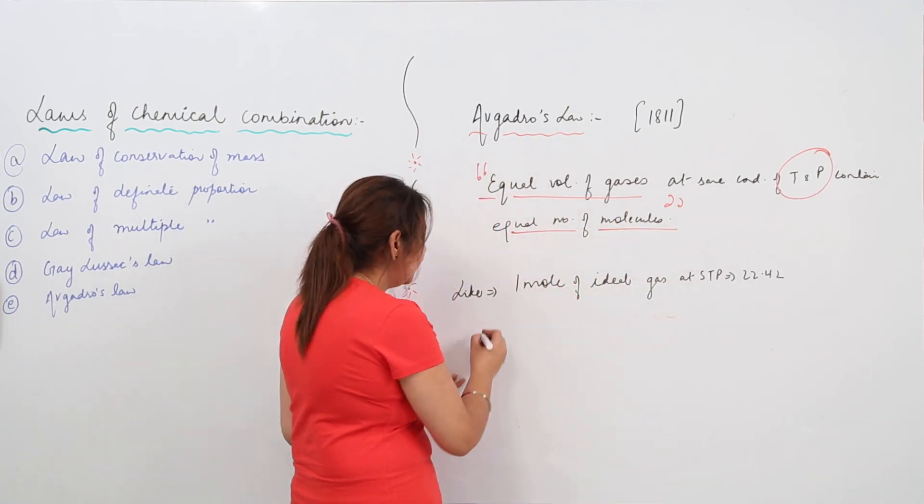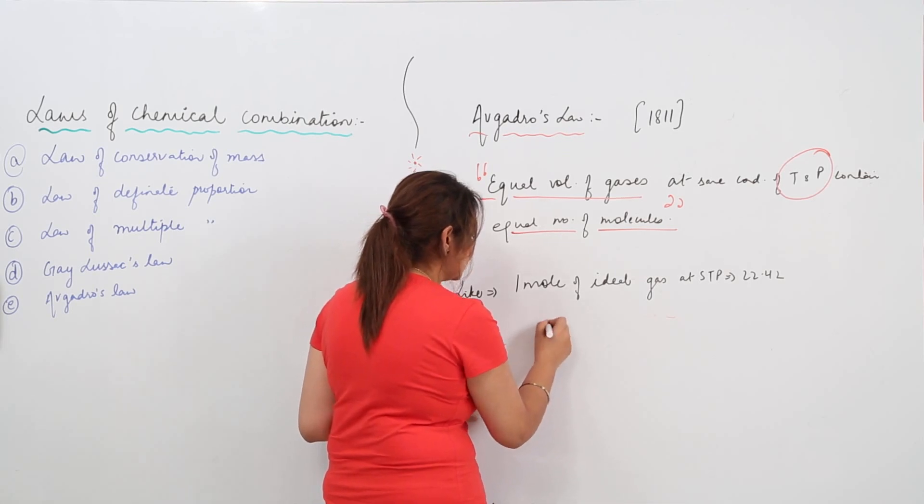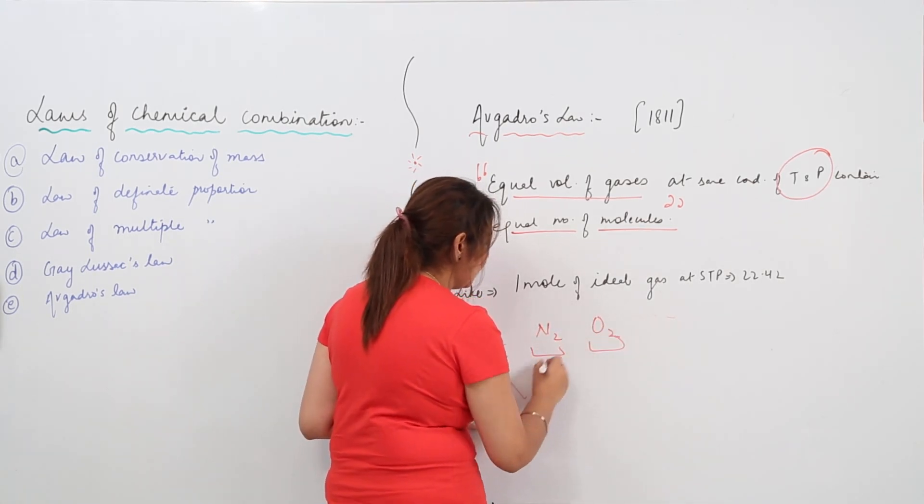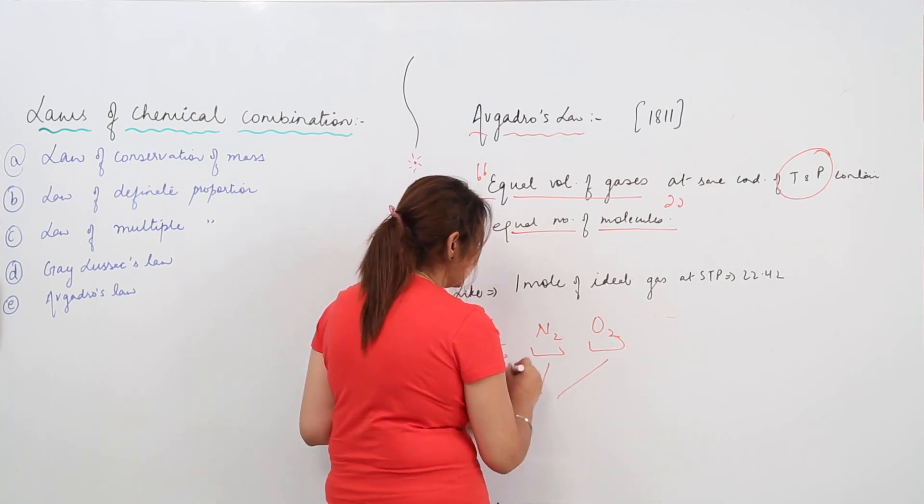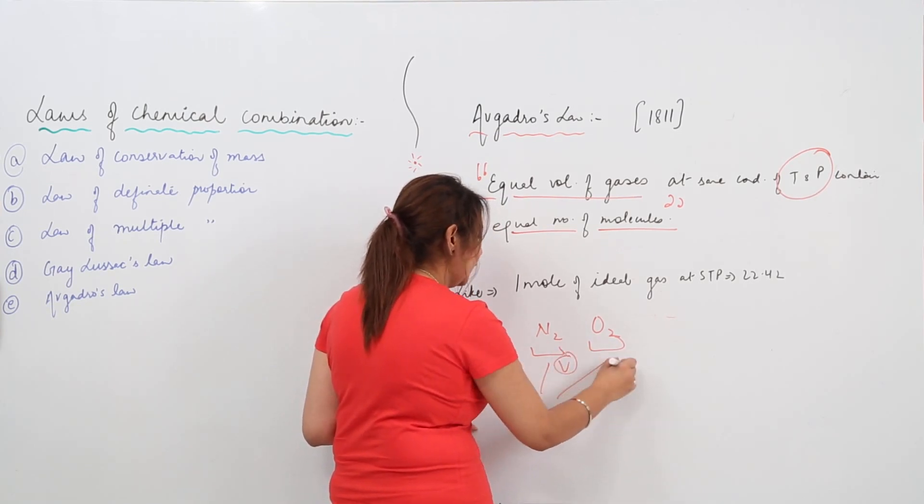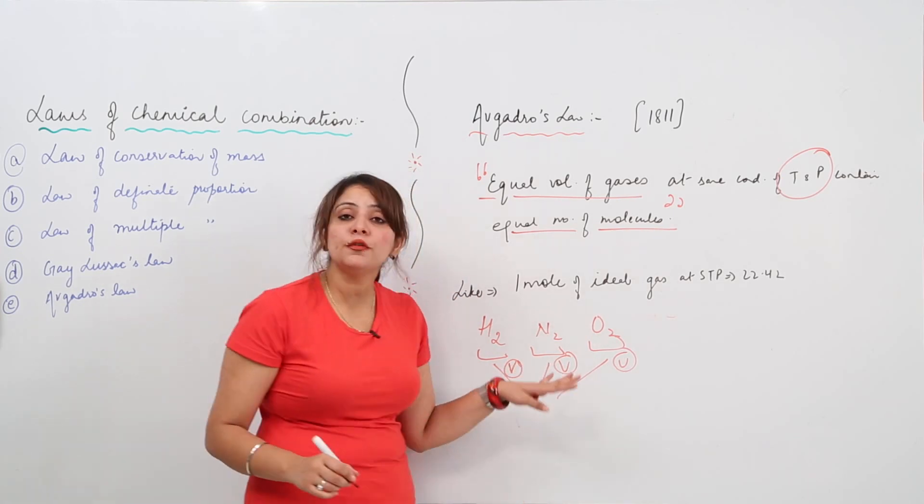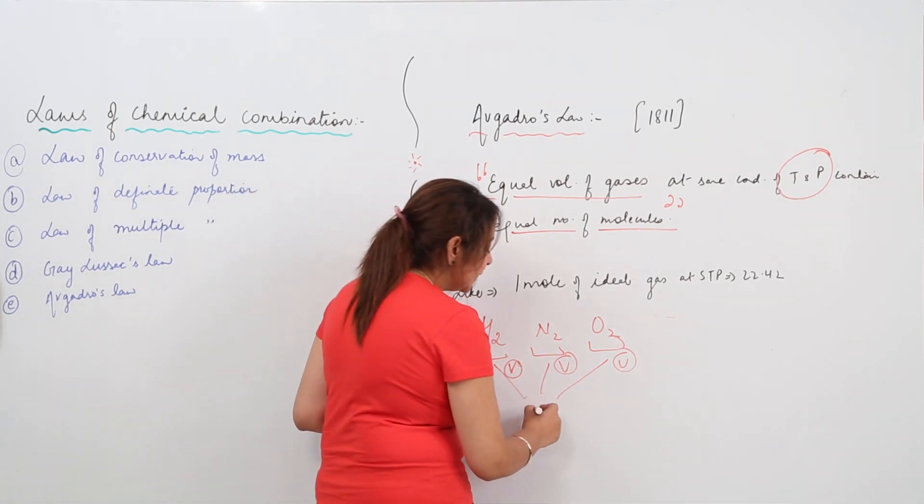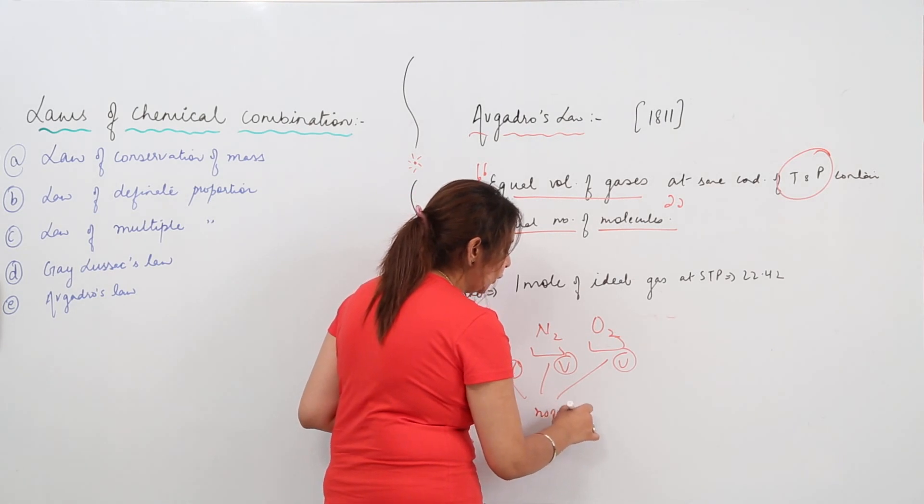For example, suppose I talk of H2 gas, N2 gas, and O2 gas. If the volume of these gases are same—let's say the volume is V for each—then they have the same number of molecules, even if the gases are different.